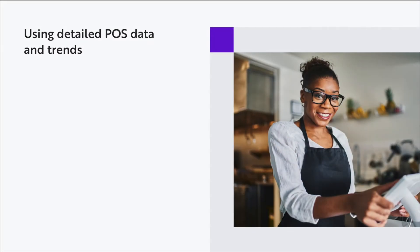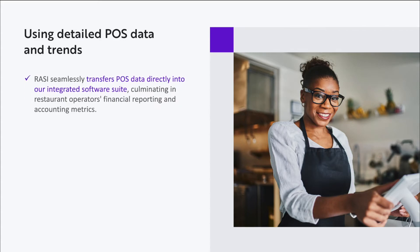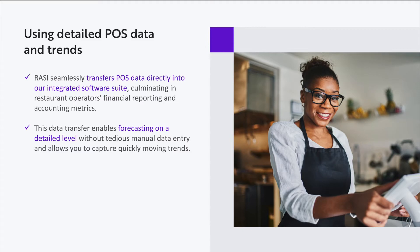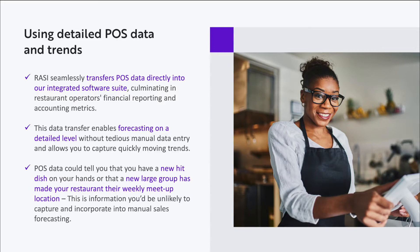The final and most technologically advanced approach is taking advantage of the wealth of data available from a modern point of sale software — also known as restaurant POS analytics. At Razzie, we seamlessly transfer POS data directly into our integrated software suite, giving restaurant operators detailed financial reporting and accounting metrics. This data transfer enables forecasting on a detailed level without tedious manual data entry and allows you to capture quickly moving trends. For instance, POS data could tell you that you have a new hit dish, or that a new large group has made your restaurant their weekly meetup location — information you'd be unlikely to capture with manual forecasting.